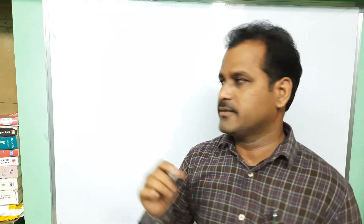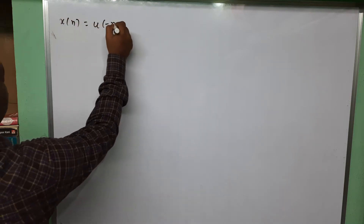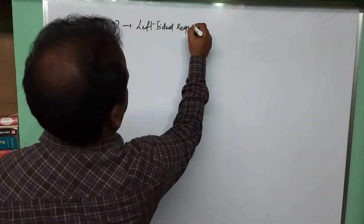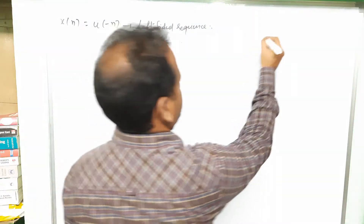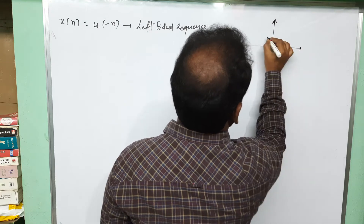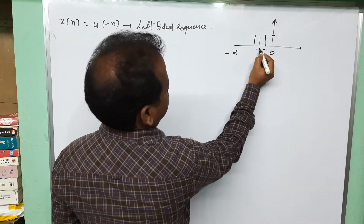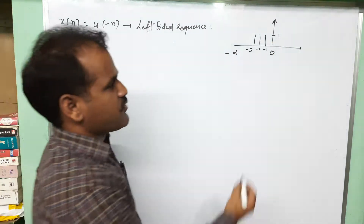Good morning students. In this video let us find the Z transform of the unit step function u of minus n. We have already calculated the Z transform of u of n and plotted the ROC for that signal. Now let us find the Z transform and plot the ROC for x of n equal to u of minus n. This is the reflection of the unit step sequence u of n, and it is a left-sided sequence. If you plot the signal, it exists on the left-hand side from minus infinity to zero, with amplitude equal to 1.